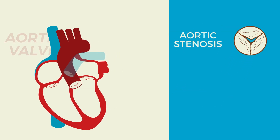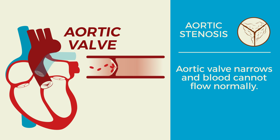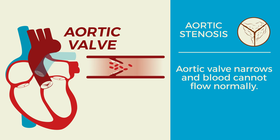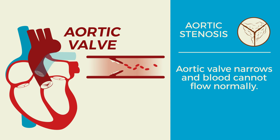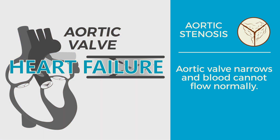In aortic stenosis, the valve is too tight, and the heart has to work extra hard to pump blood to the body. Much like when you exercise other muscles in your body, the heart muscle adapts and becomes thicker, which initially allows it to pump blood through a tight aortic valve. However, this thickening ultimately leads to heart failure if left untreated.